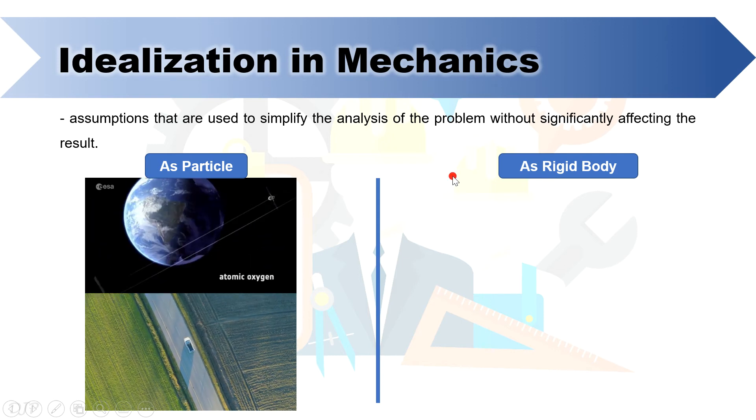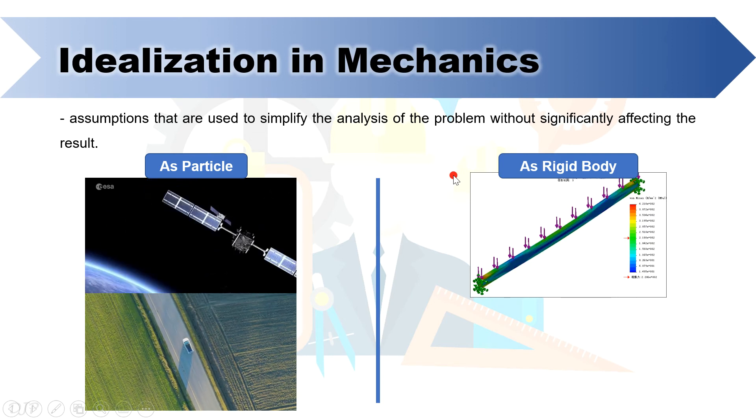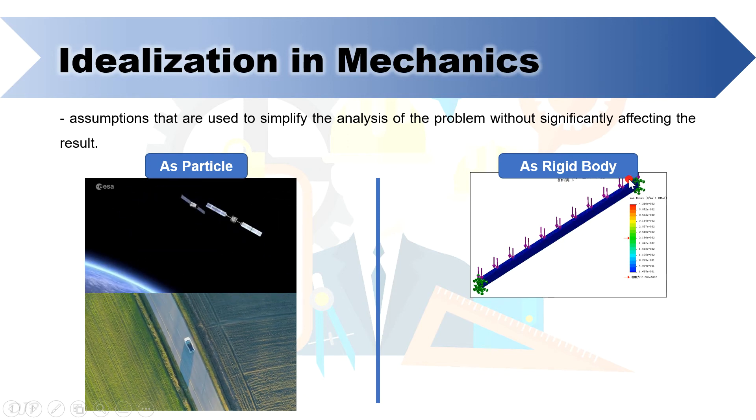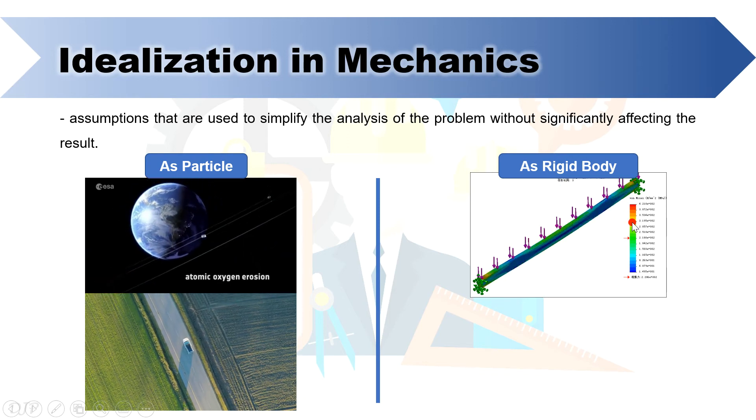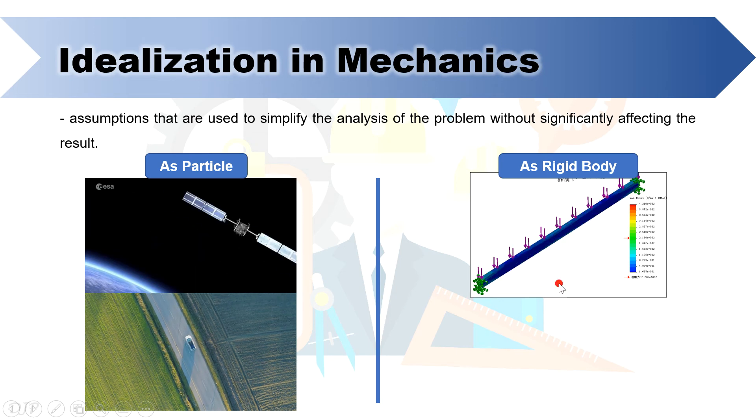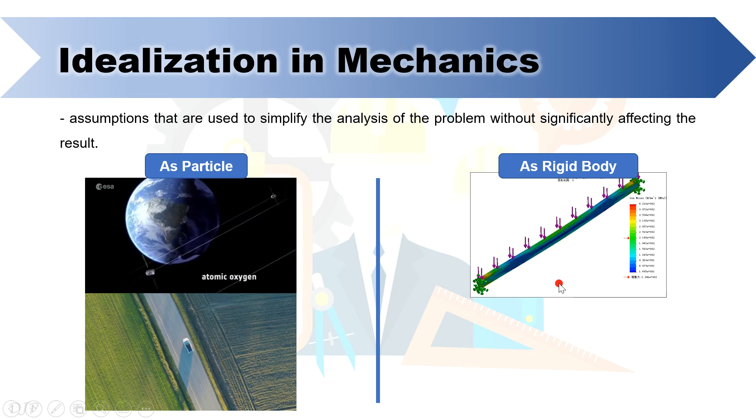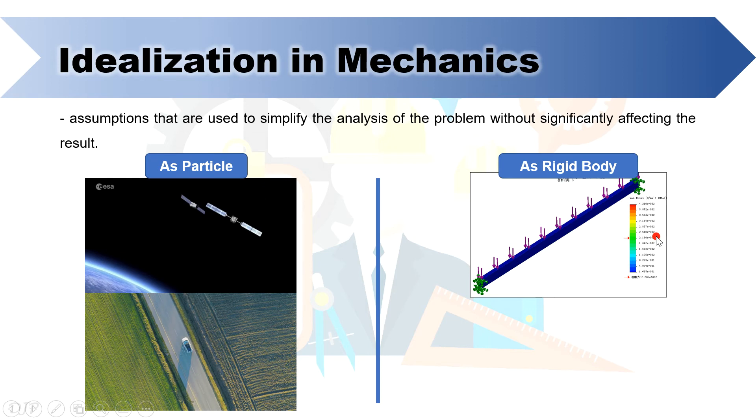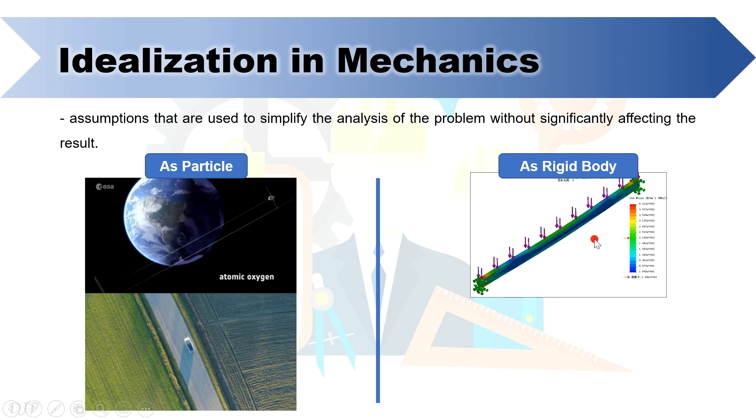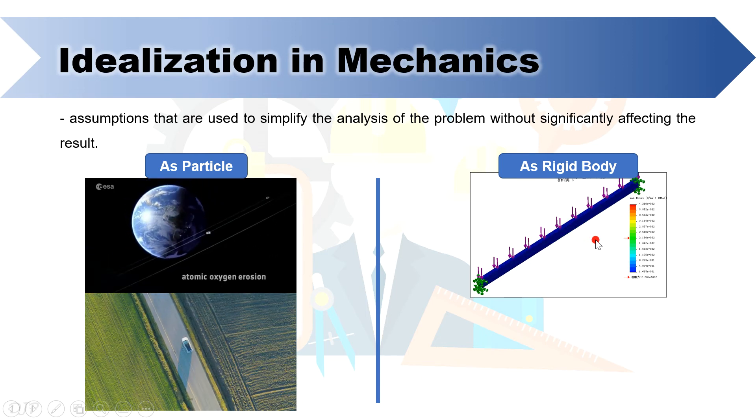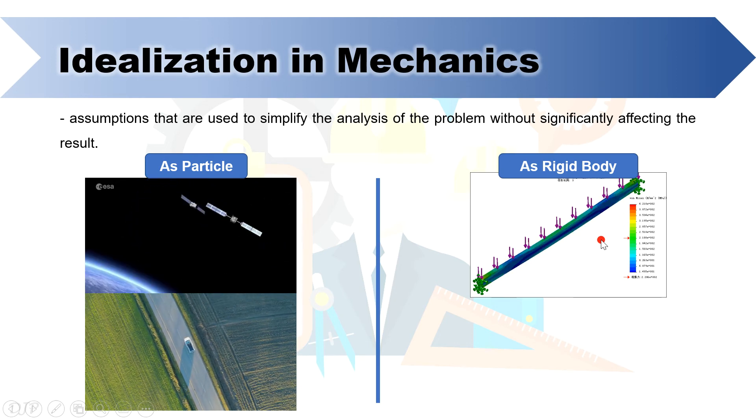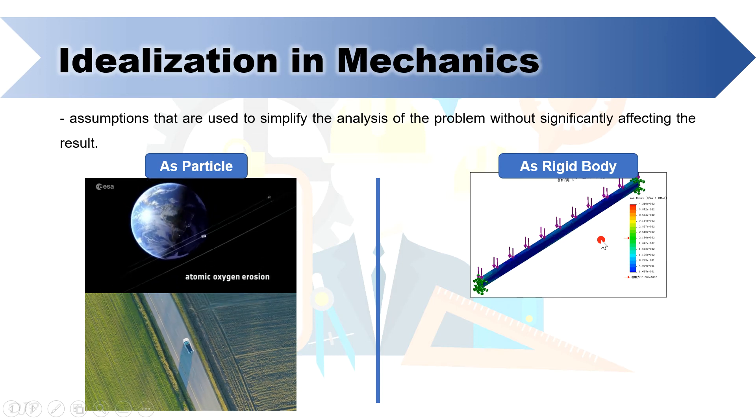Now for rigid body, let's consider this structural beam of a building. As you can notice downward forces are spread all throughout its length which means that the dimension of this body should be taken into account to investigate its motion. Also you can notice that the beam experiences a slight deflection due to the applied load. However, even with this slight deflection, the beam can still be analyzed as rigid body because the deformation is too small that it can be neglected.